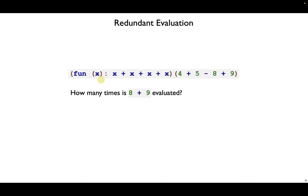We've got a function, takes in an x, and then uses x four times. And then we apply that to a large arithmetic expression. Since this expression does not get evaluated until it gets used on the inside of the function body, that means this whole expression gets swapped in four times.